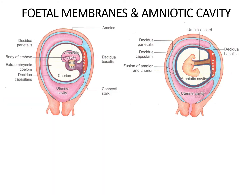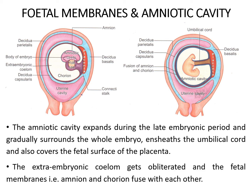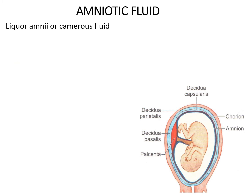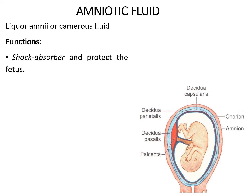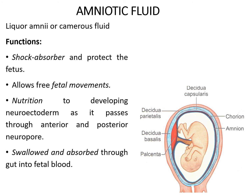The amniotic cavity expands to surround the whole embryo, ensheathing the umbilical cord and covering the fetal surface of the placenta. As a result, the extra-embryonic coelom gets obliterated and the two fetal membranes — amnion and chorion — fuse with each other. The amniotic cavity is filled with amniotic fluid (liquor amnii). It has a protective function, acts as a shock absorber, allows free fetal movements, provides nutrition to the neuroectoderm as it passes through the neural tube, and is swallowed by the fetus and absorbed into fetal blood. The fetus also excretes urine into the amniotic fluid.